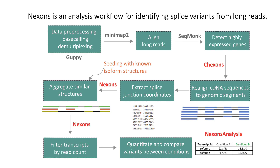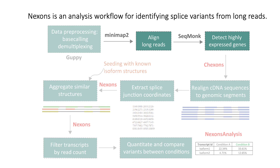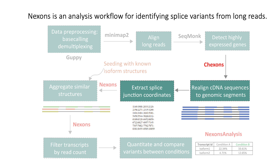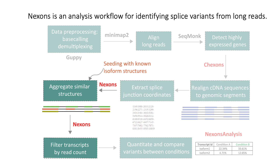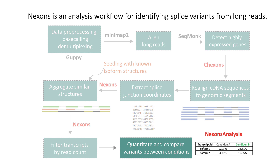We developed an isoform detection tool from long-read data and we call this pipeline NEXONS, which stands for Nanopore Exons. The pipeline starts with aligned long reads using a third-party tool — in our case, minimap. We then detect highly expressed genes, realign the cDNA sequences to genomic segments from these highly expressed genes, and extract their splice junction coordinates. NEXONS then aggregates similar structures, filtered by supporting read counts, and we quantitate and compare the variance between conditions using an R package developed for downstream NEXONS analysis.